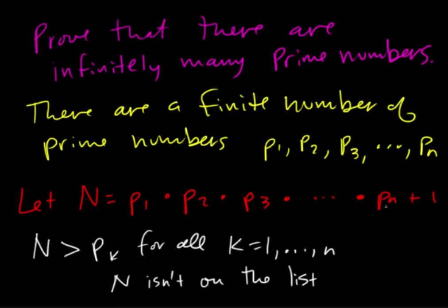So essentially what's going on here—we're multiplying all the prime numbers together and then we're adding one, and so that makes N greater than every single number on the list, and it also means N is not on the list.